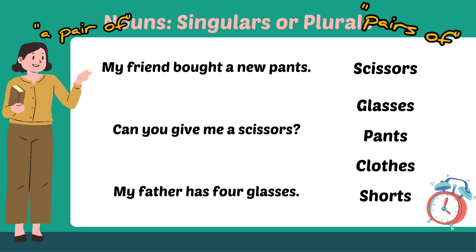For example, if we have three pairs of scissors, then we say we have three pairs of scissors. If we have two pairs of glasses, then we say I want to buy two pairs of glasses. I cannot say I have two glasses — that will be wrong, that will be incorrect. If I have two pairs of glasses, I will say I want to buy two pairs of glasses.